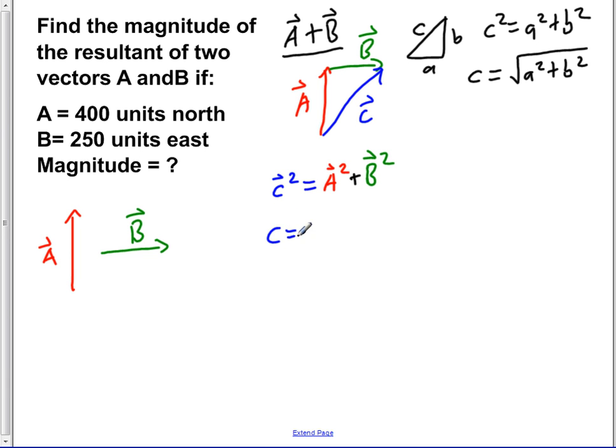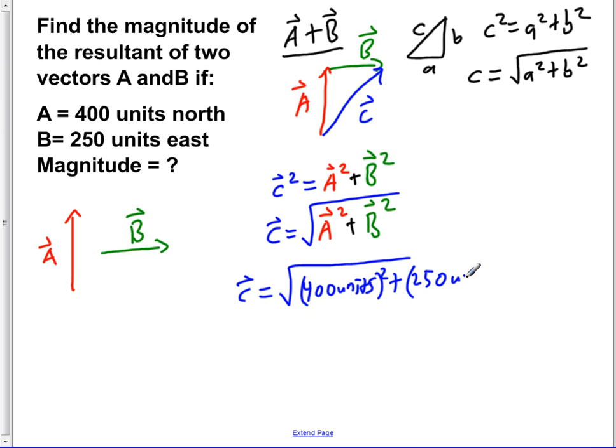So C is equal to square root of A squared plus B squared. Now if we plug in all values for everything, we would get C is equal to square root of A which is 400 units squared plus B which is 250 units squared.